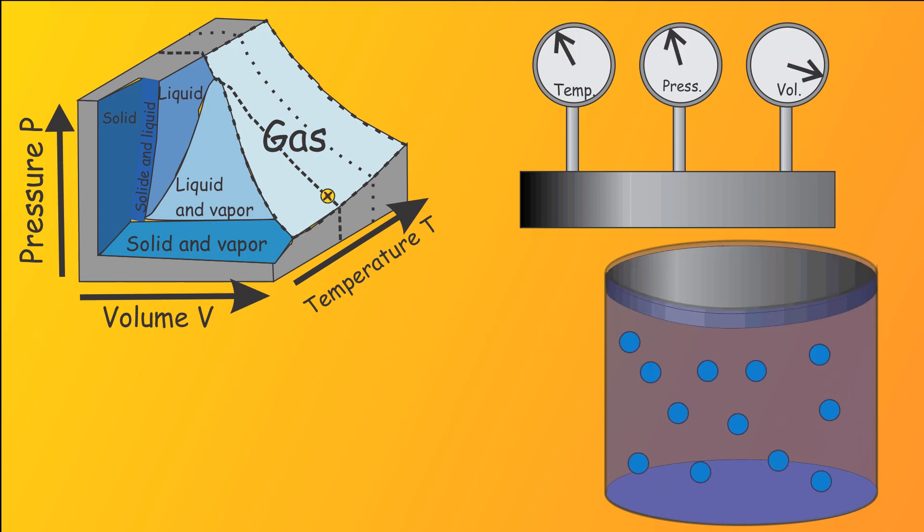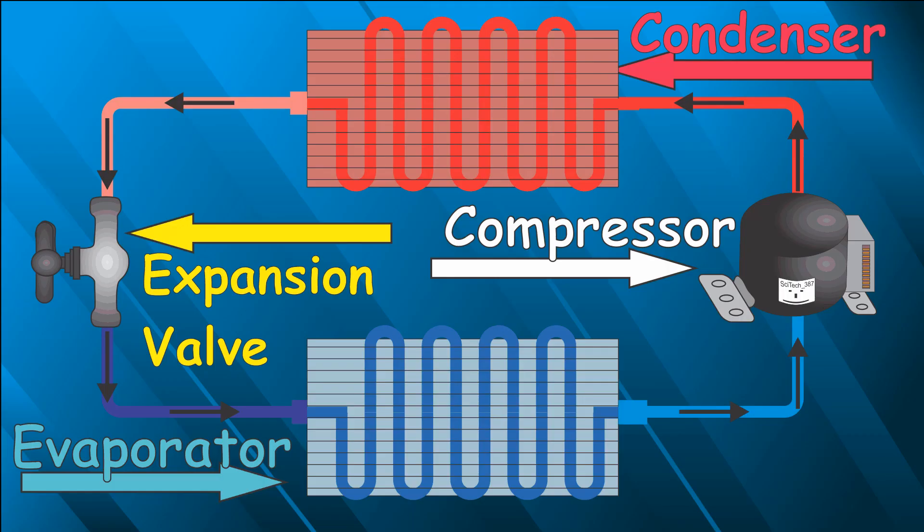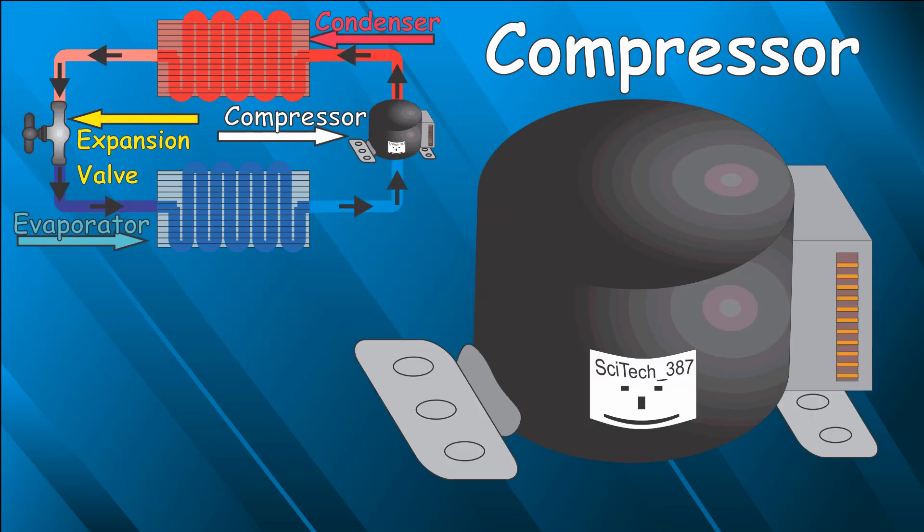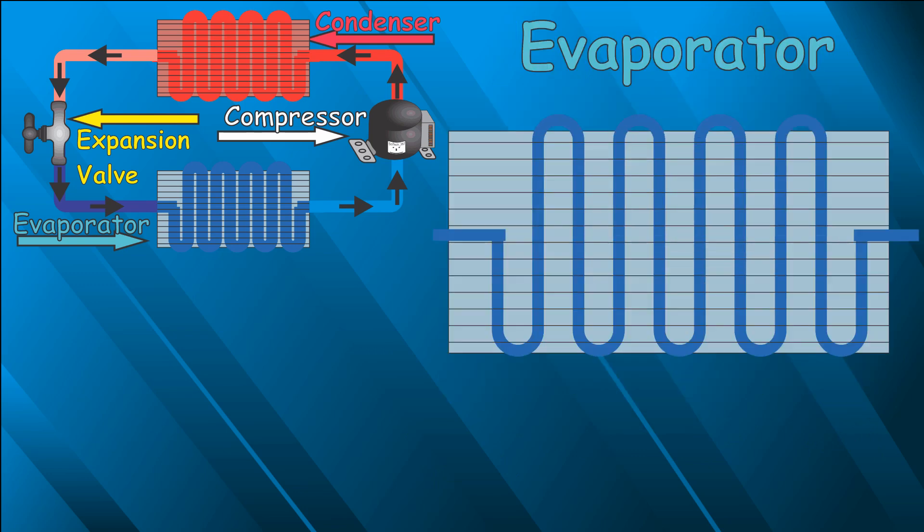Thermodynamical systems have three important parameters: temperature, pressure and volume. The change of one of those three parameters affects the other ones. A typical cooling machine has four main parts: the compressor, the condenser, the expansion valve and the evaporator.